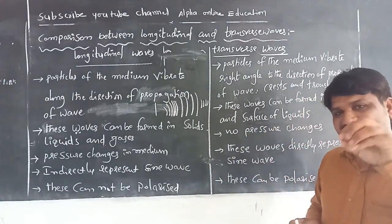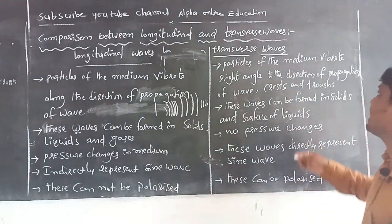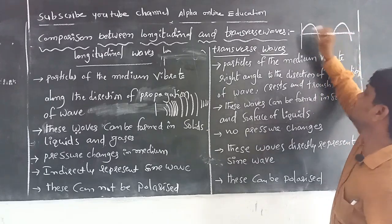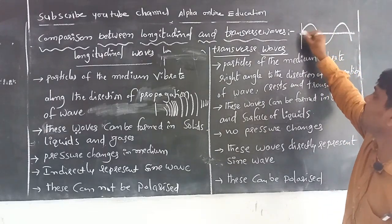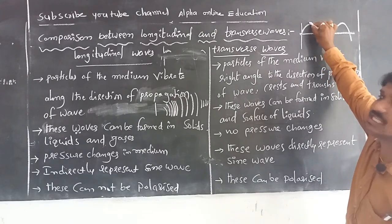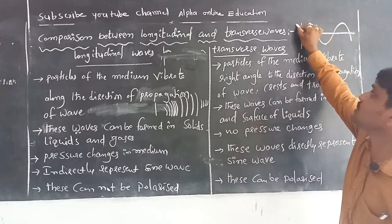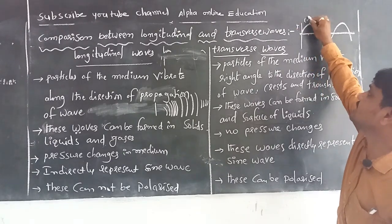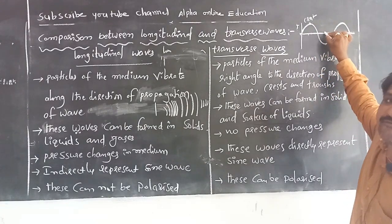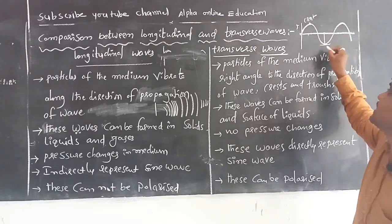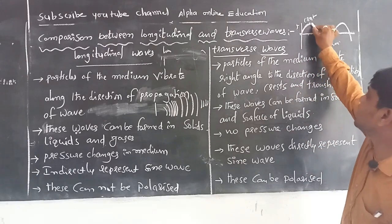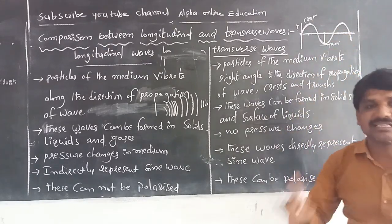Transverse waves directly represent the sine wave. The maximum displacement of vibrating particles from the mean position in the positive direction is called a crest, and the maximum displacement in the negative direction is called a trough. So transverse waves can directly be represented as a sine wave.